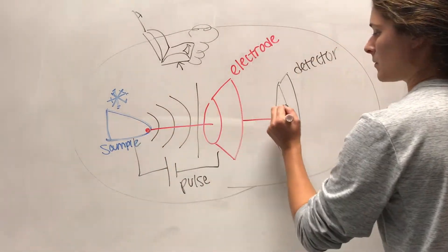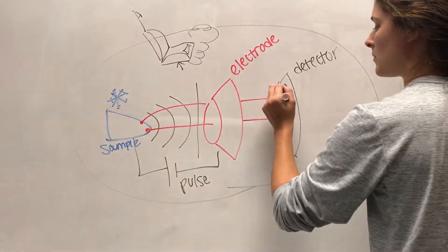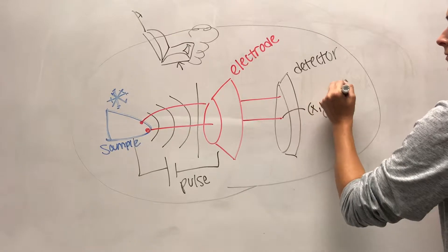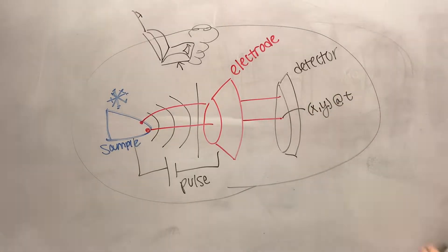This causes field evaporation, meaning that the electric field is strong enough to overcome the energy needed to remove an atom from the sample. The electric field has to be precisely calculated so only one atom leaves the sample at a time.